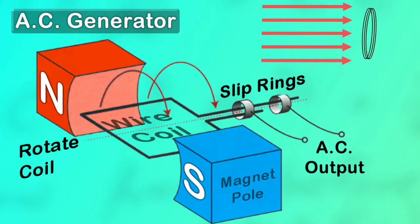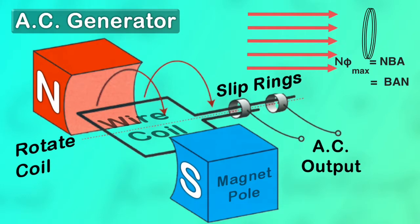If there are N loops we get NBA, so the linkage Nφ max in this position equals NBA or BAN if you're old school. We can now look at a graph of Nφ and see what that looks like. The graph of Nφ will be a cosine graph if we start in the vertical position that we've got the coil shown here.